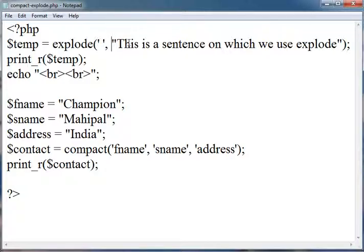So after 'this' there is a space, after 'is' there is a space, after 'a' there is a space. So this will break this complete sentence into an array which contains 'this', 'is', 'a', 'sentence', 'on', 'which', 'we', 'use', and 'explode' as its elements.